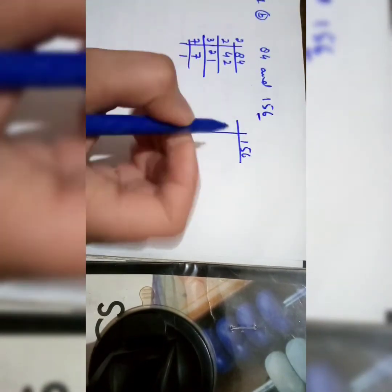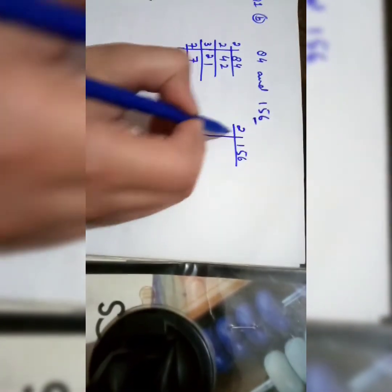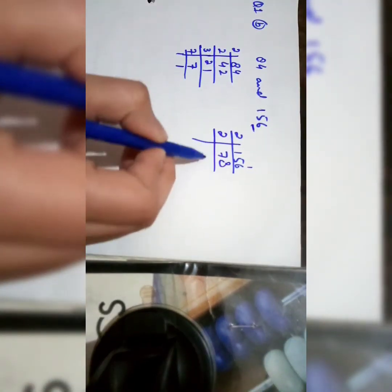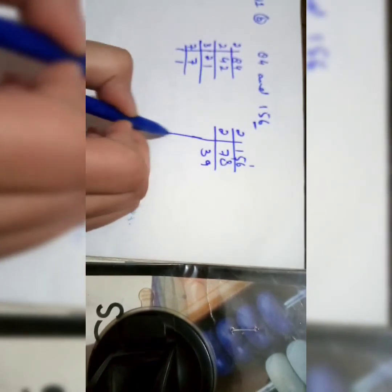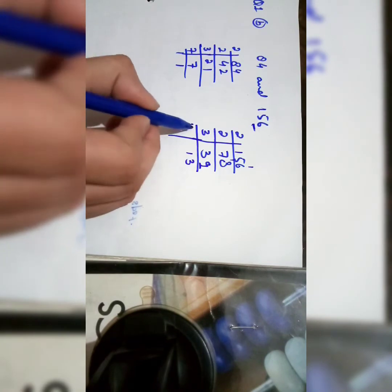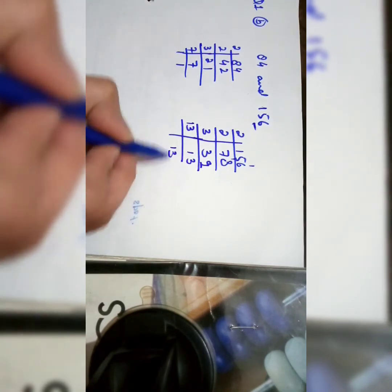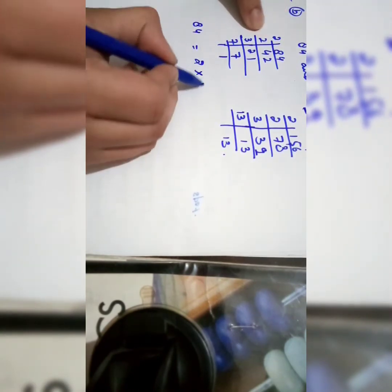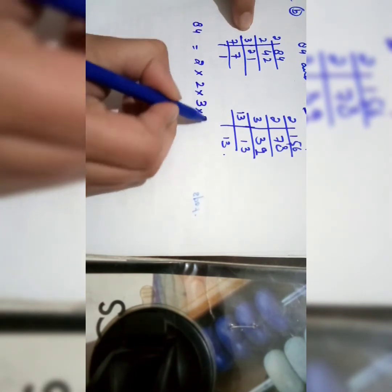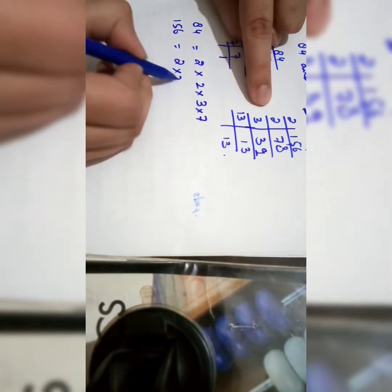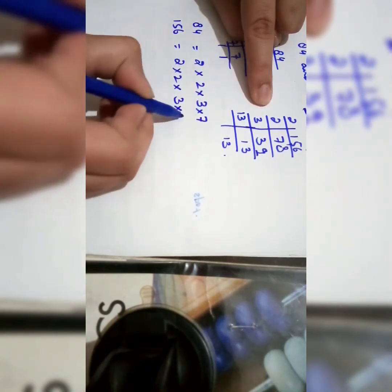Now for 156: it is even so divisible by 2. Dividing gives 78; dividing 78 by 2 gives 39. Now 39 is an odd number and divisible by 3: 3 thirteens are 39. 13 is only divisible by itself. So write down the factors: 84 has factors 2 multiplied by 2 multiplied by 3 multiplied by 7. The factors of 156 are 2 multiplied by 2 multiplied by 3 multiplied by 13.